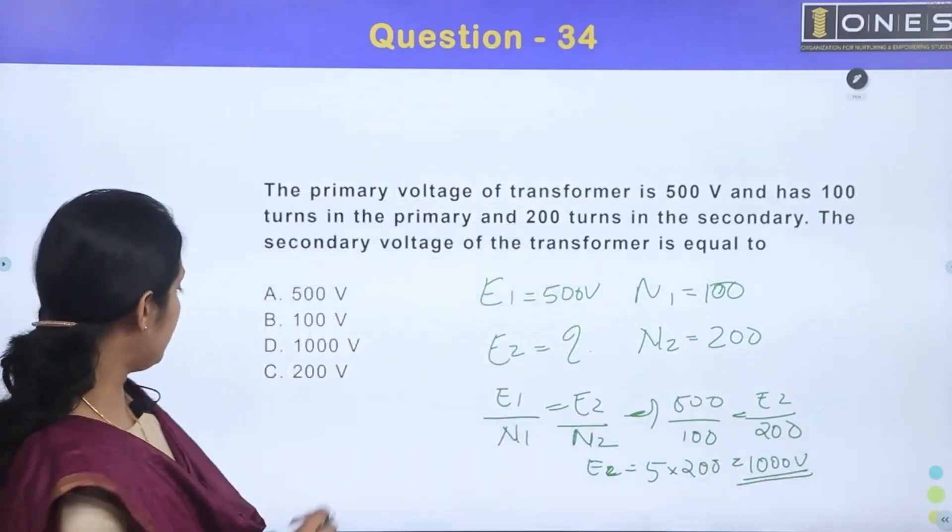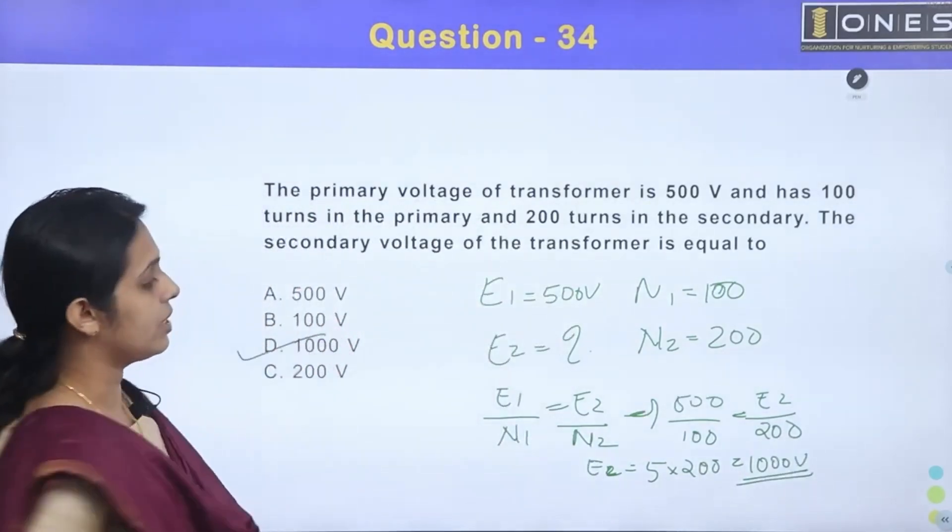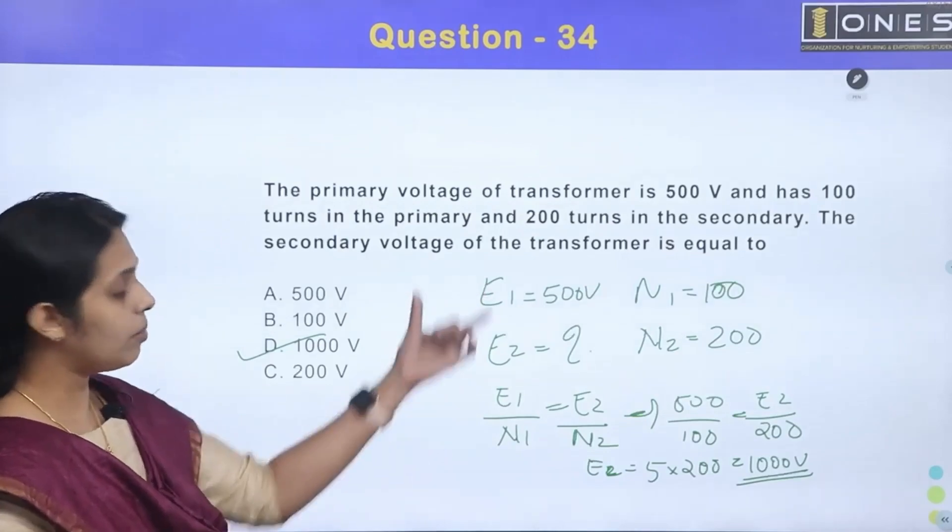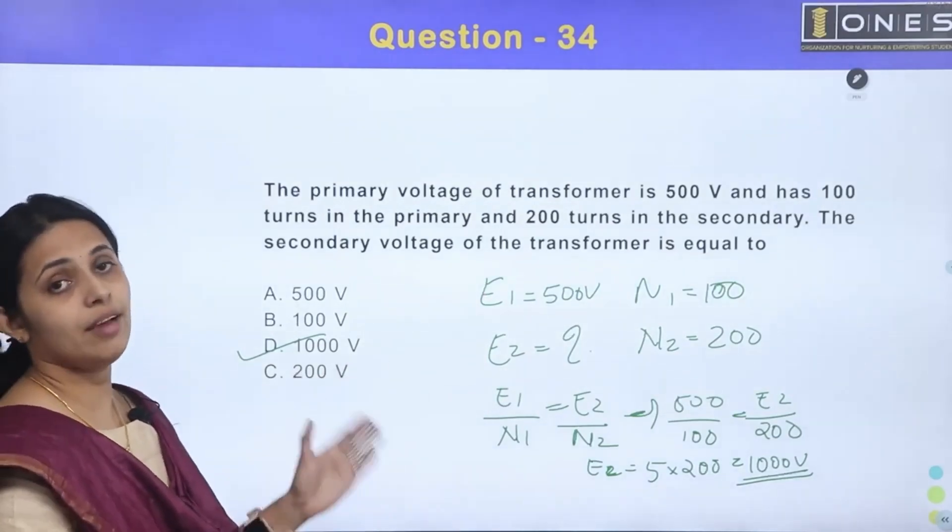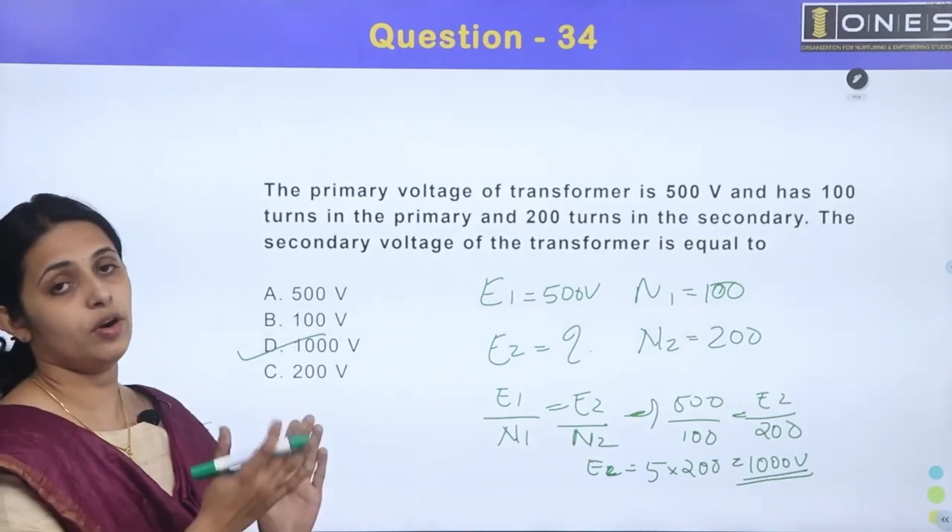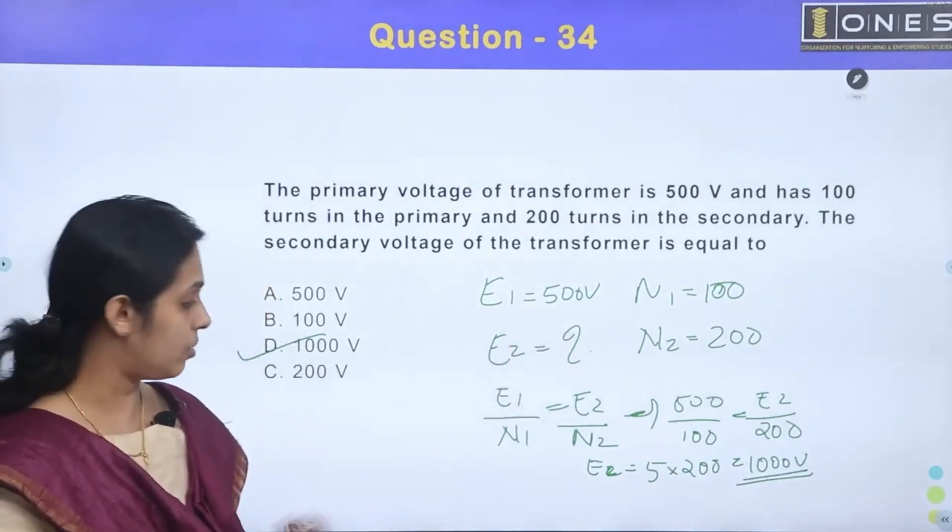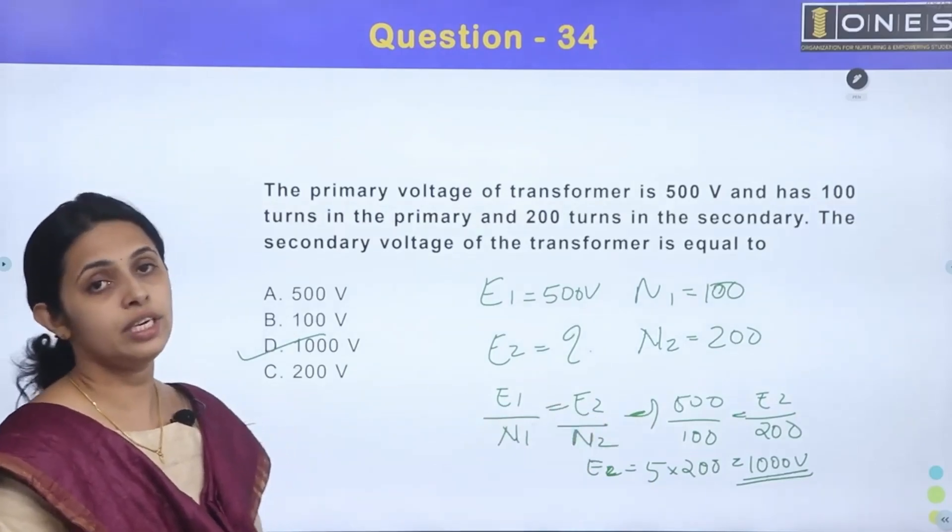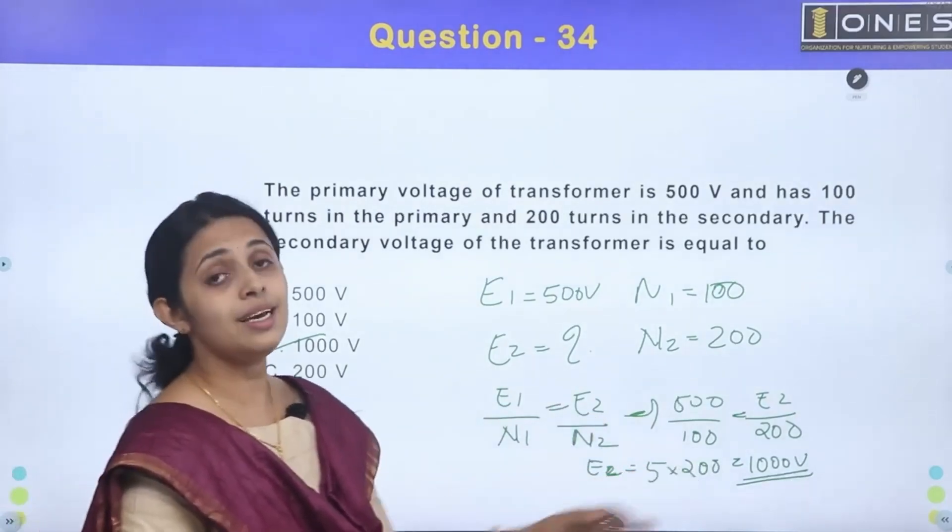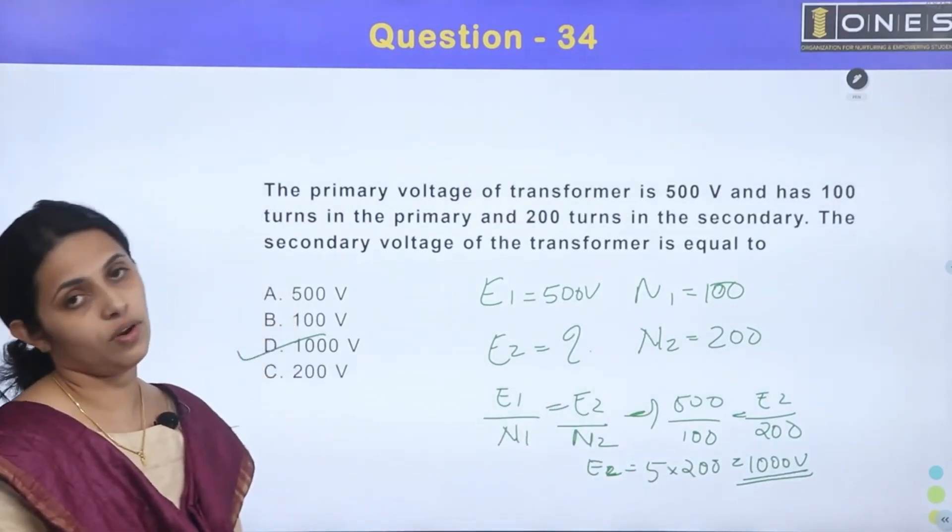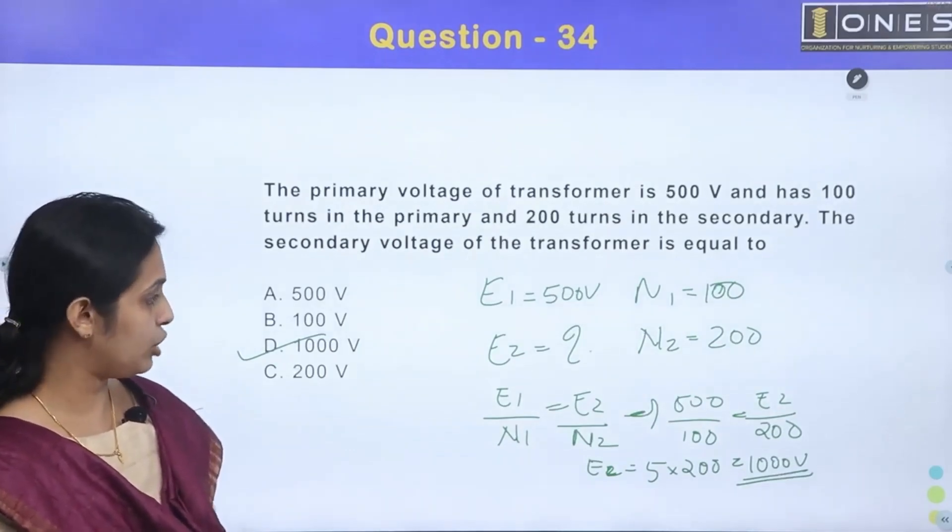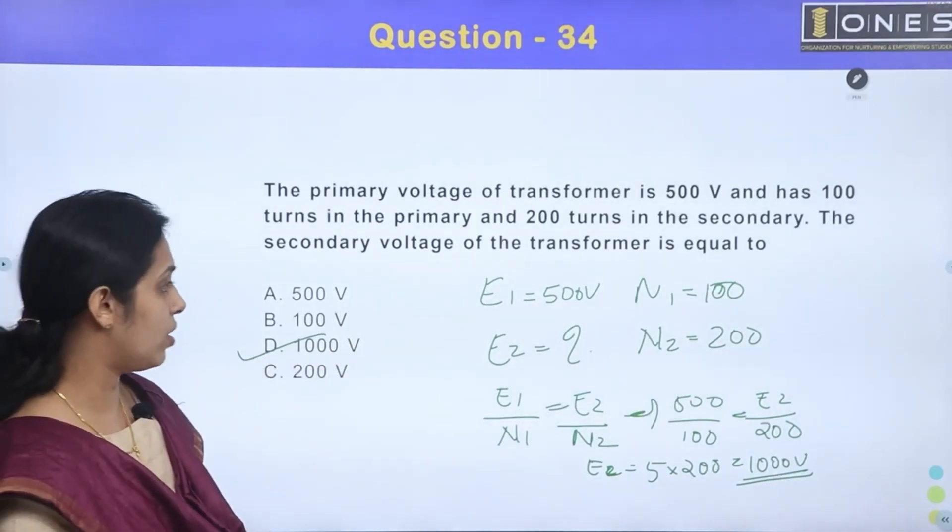So we will see that E2 is 1000V. E1 by N1 is equal to E2 divided by N2, that is the secondary induced voltage value. So we will answer Option D is 1000V.